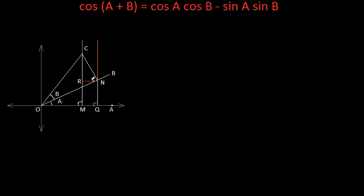So, now let's derive the formula for cos A plus B. A plus B is actually the angle COA or you can say COM in the triangle COM. This total is A plus B. So, cos A plus B can be written as cos is base by hypotenuse. So, OM by OC. This is equal to cos A plus B.